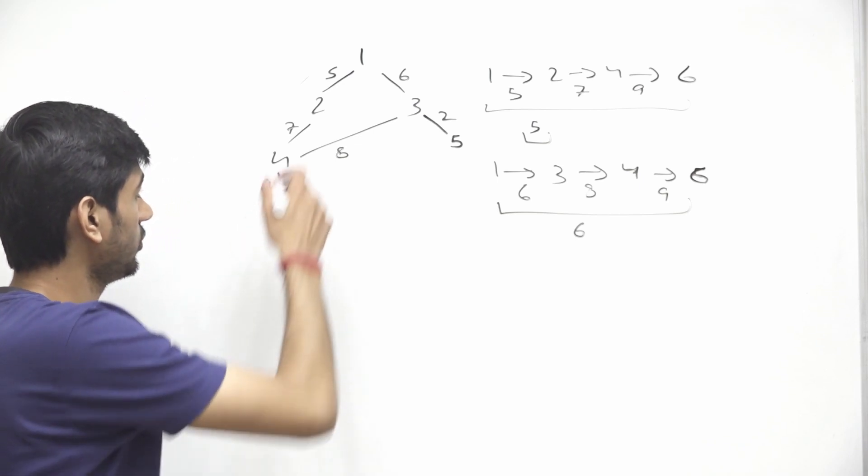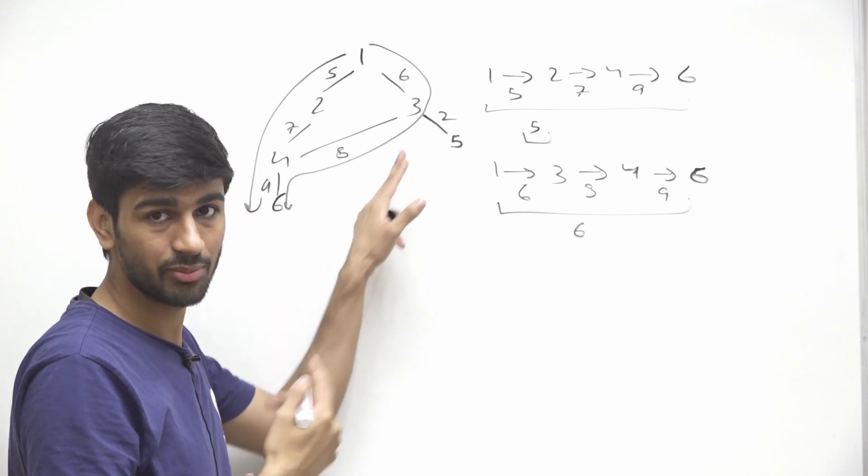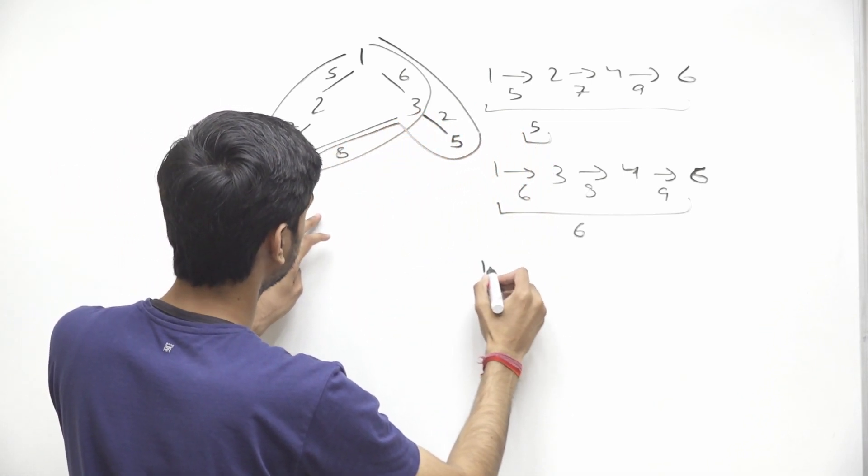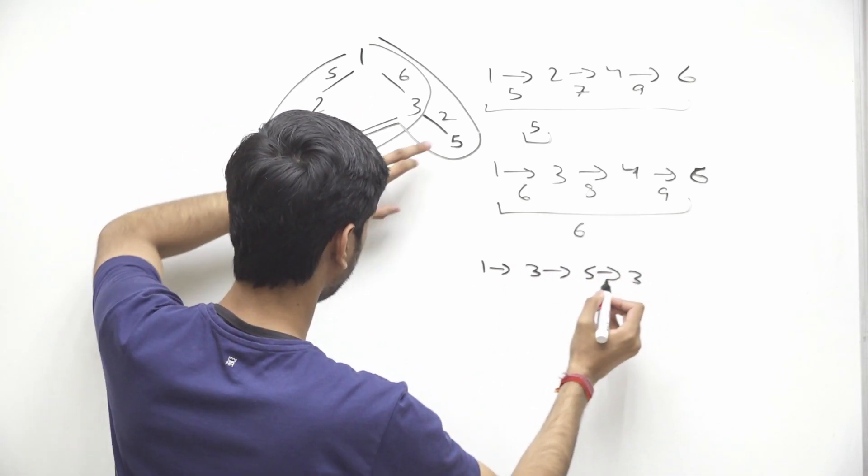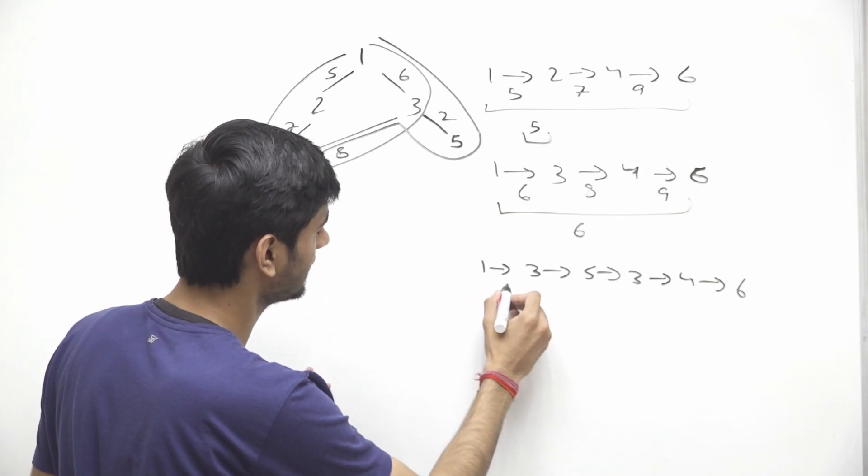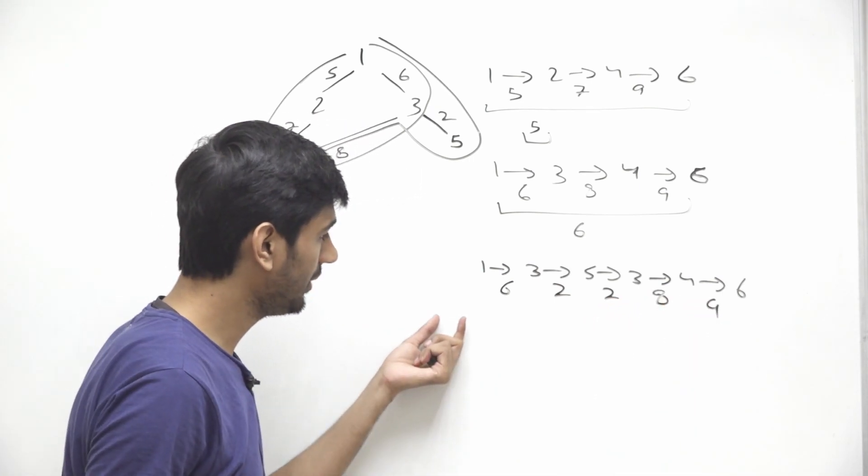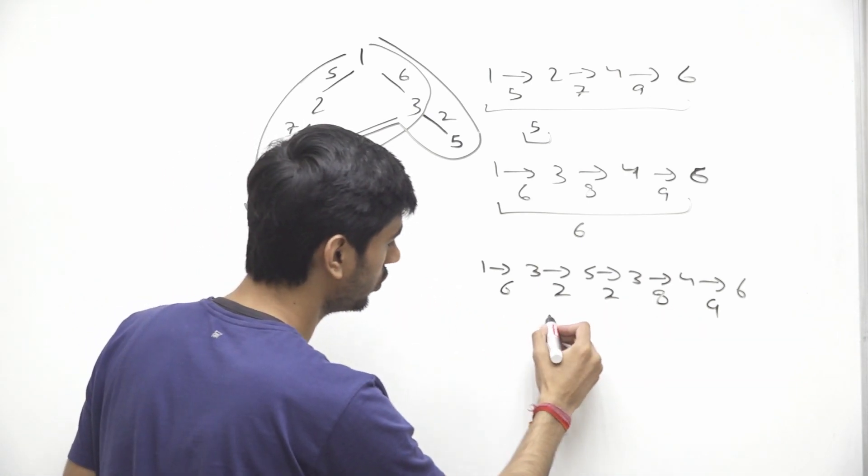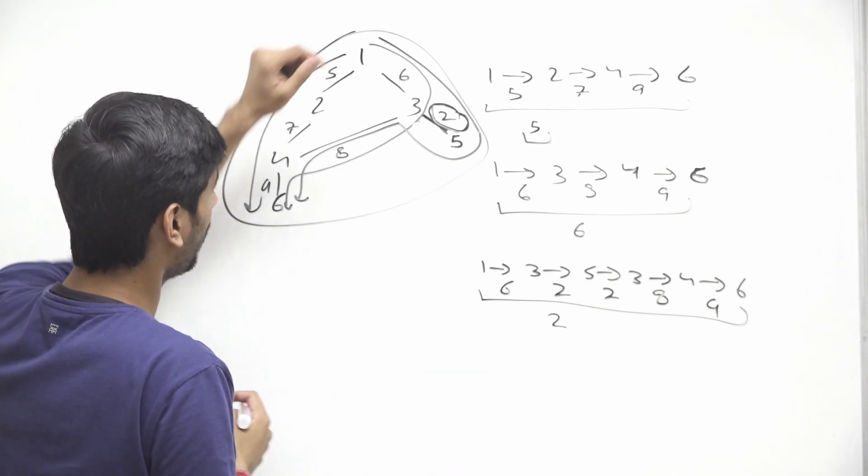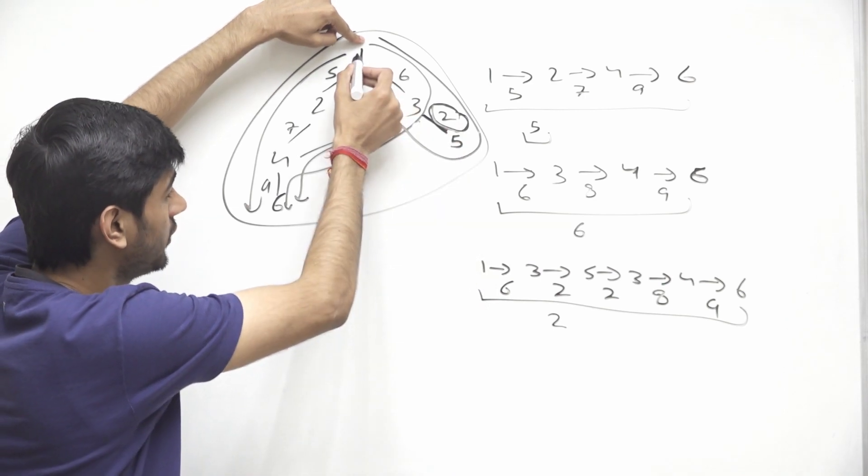So we considered this path, we considered this path. Now, because we can consider same edge multiple times, can we start traversing here? Then we can go back here and we can reach here. Like I will just write the path 1 to 3, then 3 to 5, then 5 to 3 again, we will come back. Then from 3 we will go 4, then from 4 we will go to 6. So the weight between this edge from 1 to 3 is 6. Then this weight is 2. Then again this weight is 2. Then this weight is 8. Then this weight is 9. Now the minimum weight of any edge in this path is 2. So the score of this path will be 2. So from this, can we say in a generic case, we can always start from node 1 and we can always visit the edge with minimum weight and then we can come back to 1. And from 1 we can go to n. Because the number of nodes does not matter. We just need to minimize the score and score is dependent on the weight of the edges.